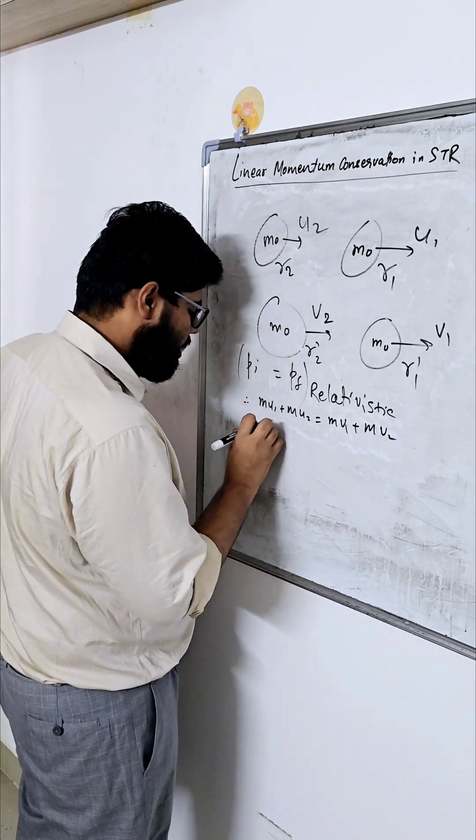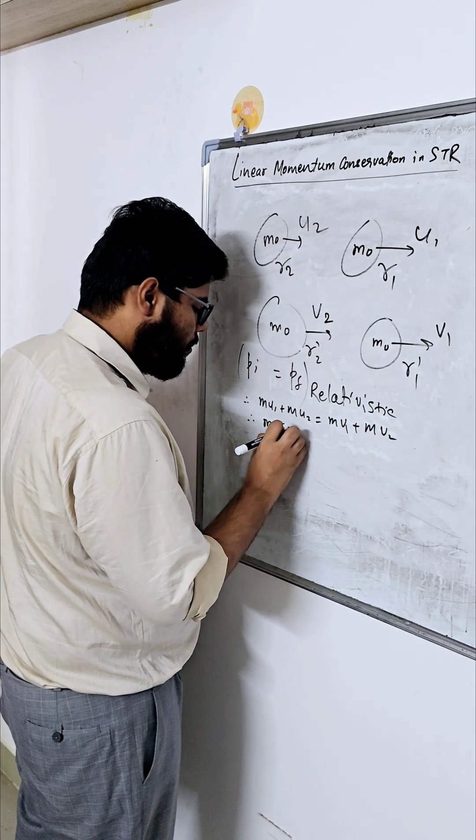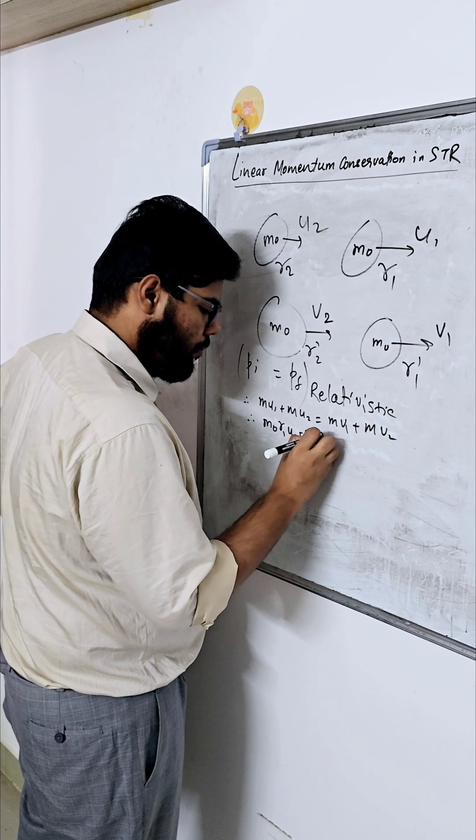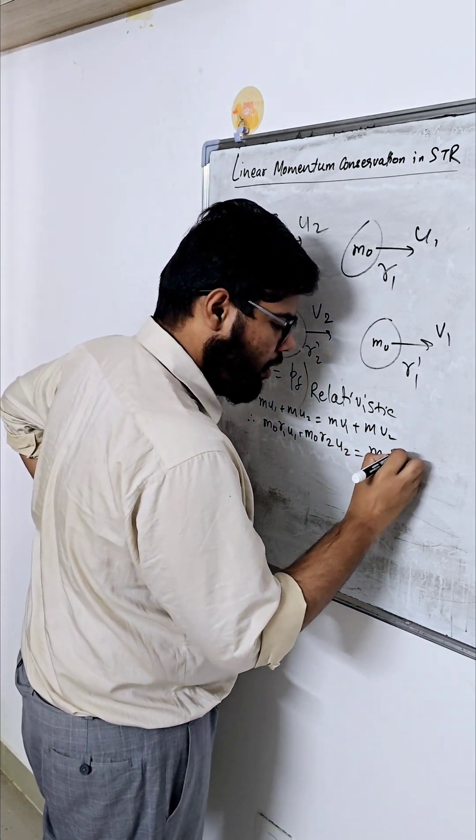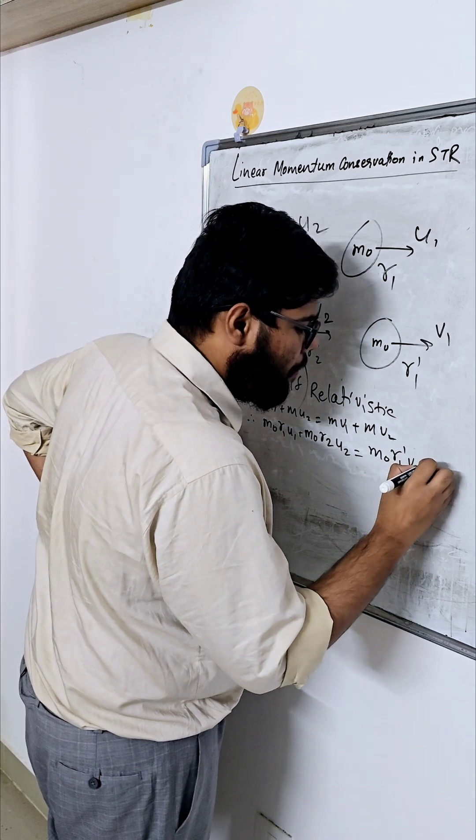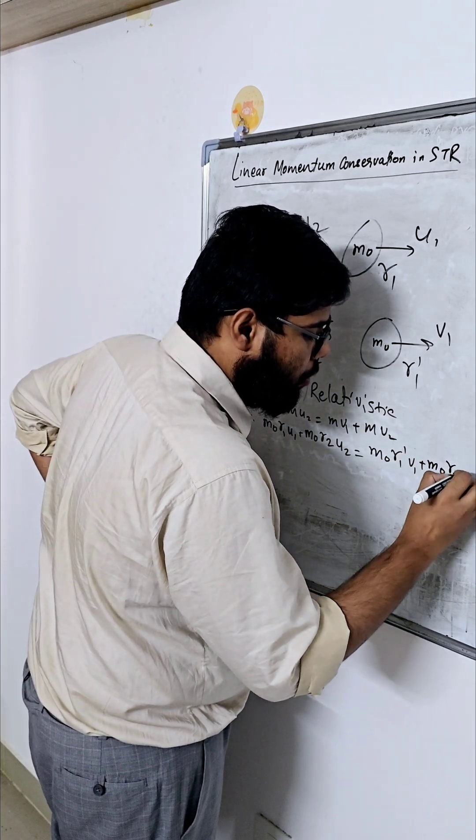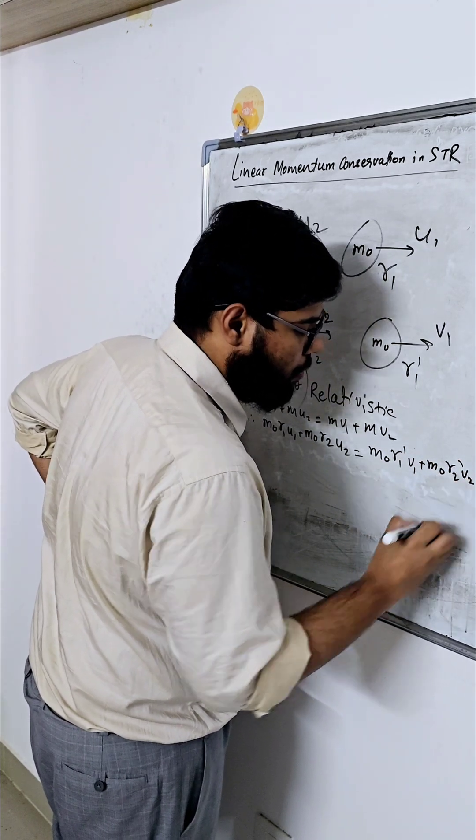So it will be M0 gamma1 U1 plus M0 gamma2 U2 is equal to M0 gamma1 dash V1 plus M0 gamma2 dash V2.